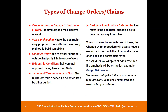The types of change orders and claims that typically arise: number one, the owner wants to change the scope of work — the simplest and most positive scenario. Two, value engineering, where the contractor proposes a more efficient and usually less costly method to build something. Three, a schedule delay due to owner, designer, or outside third party interfering with progress. Four, hidden site conditions not apparent during the pre-bid job walk. Five, inclement weather or acts of God. And six, design or specification deficiencies that result in extra time and money to resolve.